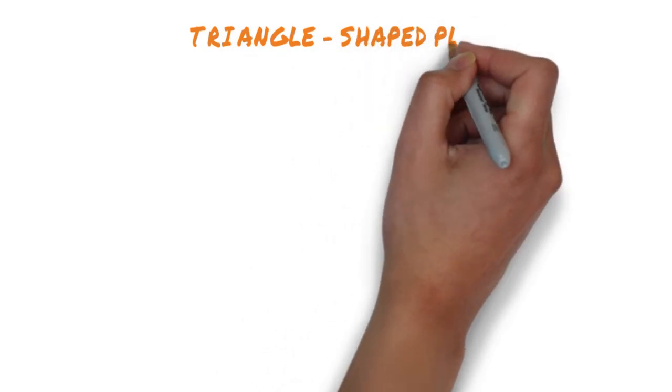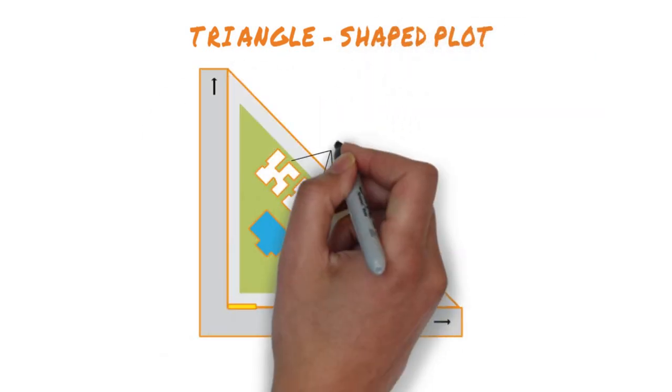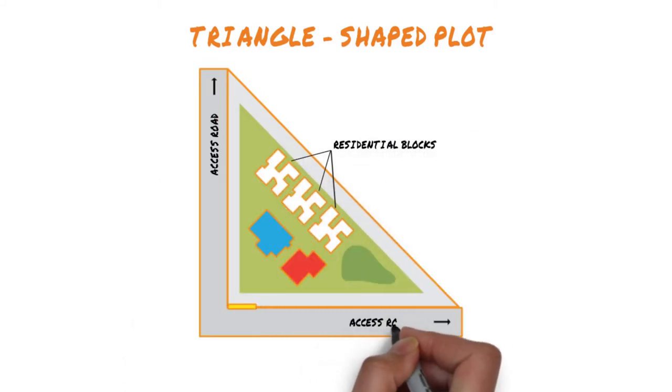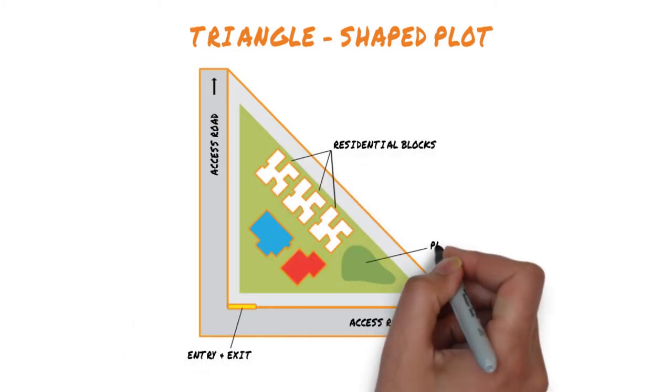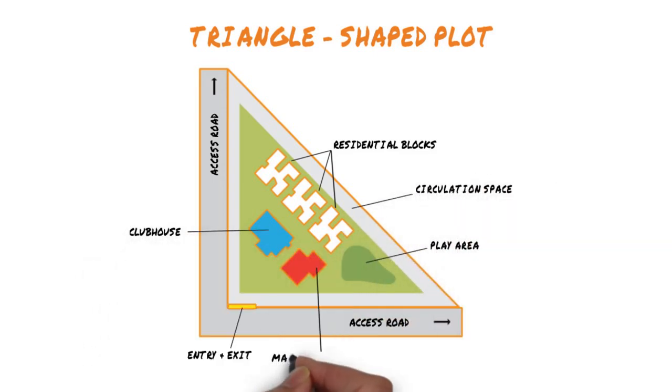Next, there are triangular plots. They are usually located at corners and are bounded by roads on at least two sides. People living in units closer to the periphery might face constant pedestrian and vehicular traffic noise. Check how traffic moves within the compound and whether the entry and exits offer easy road access.